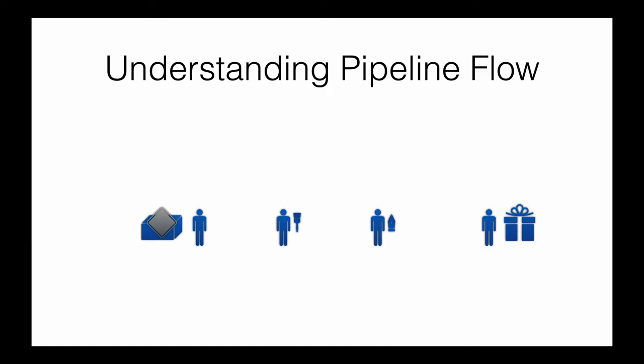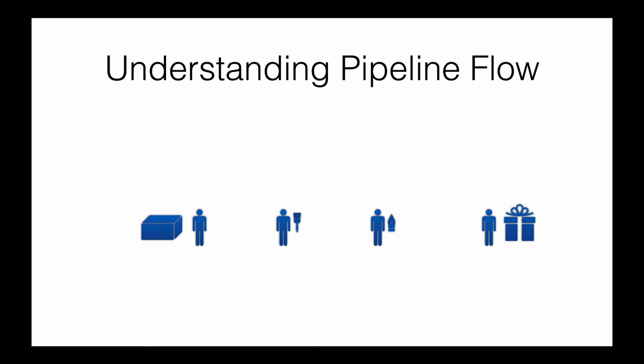From the operations perspective, the very first person takes the sign out of the box and hands it over to the next person whose job is to color the sign. That person colors the sign and hands it over to the next person whose job is to write on the colored sign. That person does their job and hands the sign to the fourth workstation whose job is to put it into the box so that it can be shipped out. This is the concept of the pipeline that would be implemented in most factories in the real world.